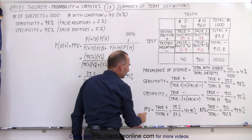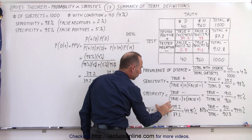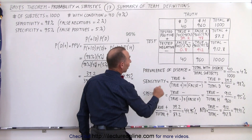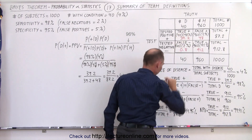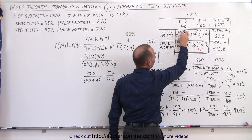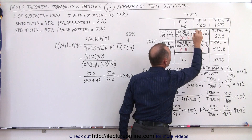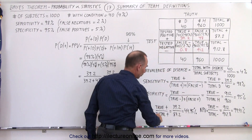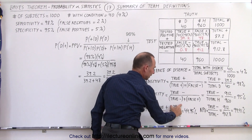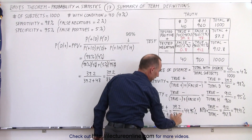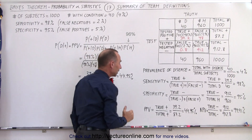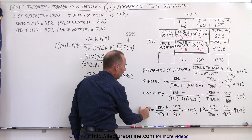The PPV, the positive predictive value, is the ratio of the true positives divided by the total number that tested positive. The true positives are those who have the disease and test positive. The total positives include those truly positive plus the false positives. That ratio — about 45% — is the probability that if you test positive, you have the disease. That's called the positive predictive value.